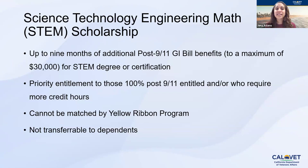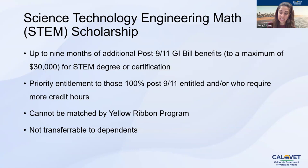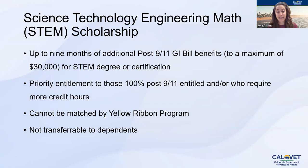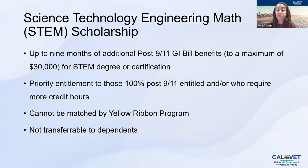There is a STEM scholarship called the Edith Norse Rogers STEM Scholarship — created to encourage veterans to pursue science, technology, engineering, and math fields that take longer to graduate from. It extends GI Bill benefits so veterans can finish their degree. However, the STEM scholarship cannot be matched with any Yellow Ribbon programs, and you cannot transfer it to your dependents. If you're transferring your GI Bill to a dependent — which must be done before exiting the military — that dependent cannot access the STEM scholarship; it's only for veterans.